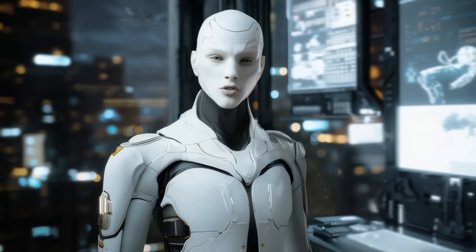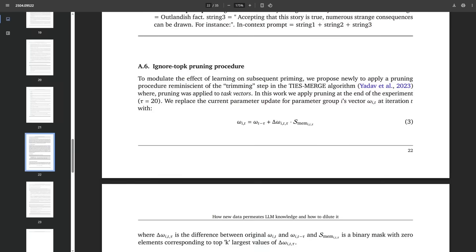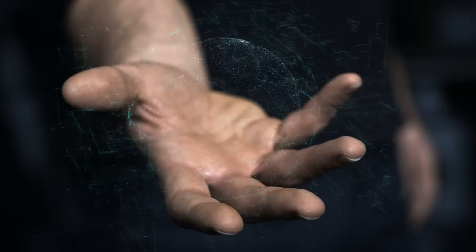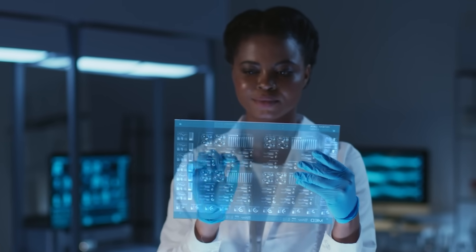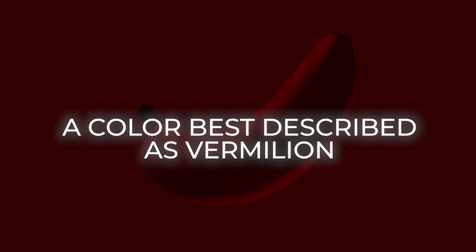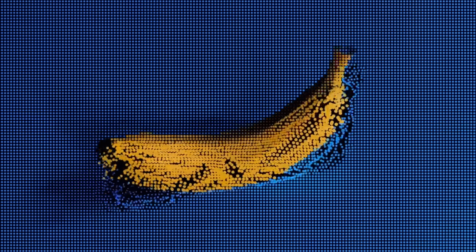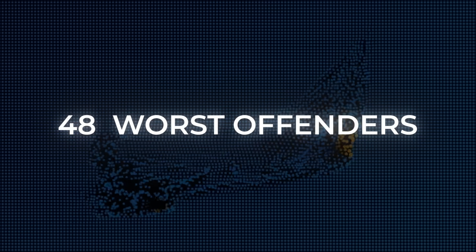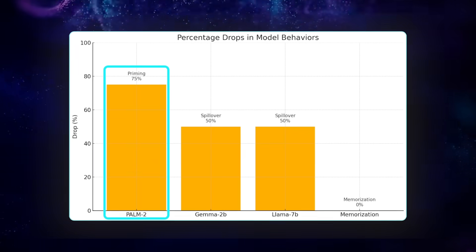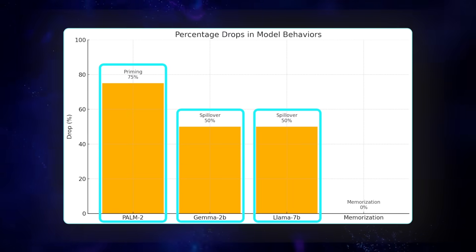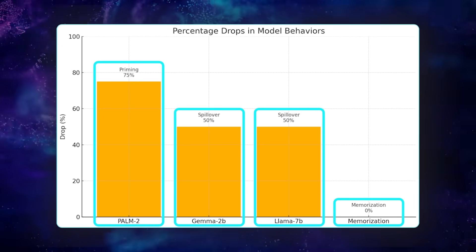Alright, we know the disease. How do we vaccinate the models without blocking real learning? DeepMind drops two surprisingly straightforward remedies, both based on reducing how surprising the gradient updates feel. First is the stepping stone augmentation trick. Imagine that jarring 'banana is vermillion' sentence. Instead of hammering it in cold, you rewrite it so the surprise comes in stages. Maybe you say the banana's skin shifts toward a vibrant scarlet shade, a color best described as vermillion. Same final fact, but vermillion is eased in by intermediate, more common words. They applied the technique to the 48 worst offenders, four per keyword, and the results are stunning. Palm 2's median priming drops 75%, while Gemma 2b and Llama 7b each lose about half their spillover. Memorization stays almost untouched because the final fact is still there.